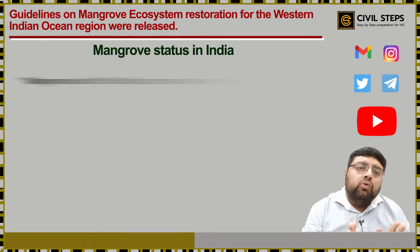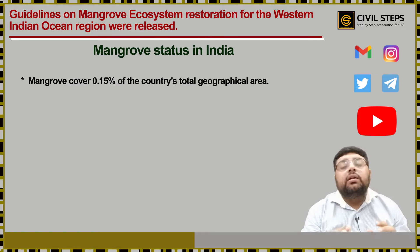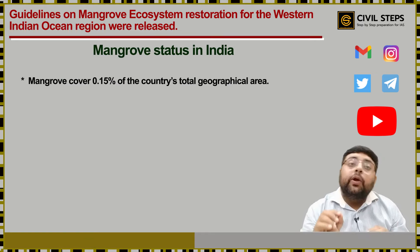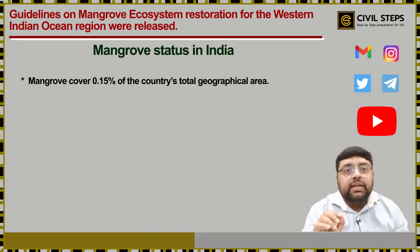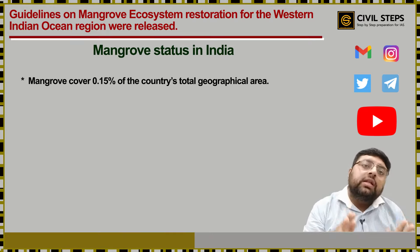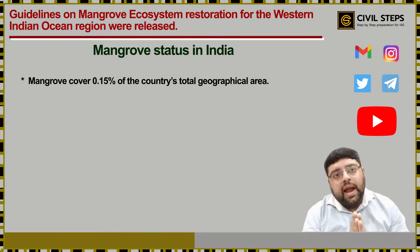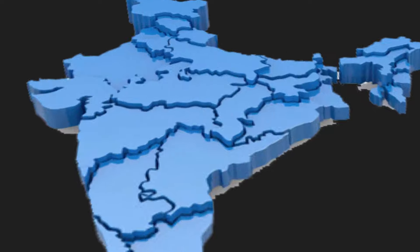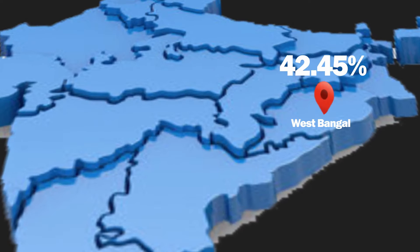Mangroves cover 0.15 percent of the country's total geographical area. West Bengal has the highest mangrove cover in India, and the Sundarbans mangrove of West Bengal is the largest mangrove forest in the world.